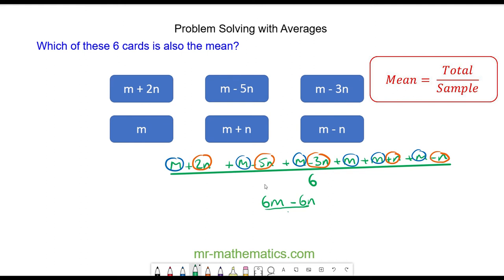And this is divided by the sample size of 6. I can factorise the numerator by taking out 6. So 6 lots of m minus n, all divided by 6. I can simplify this fraction by dividing the numerator and denominator by 6.